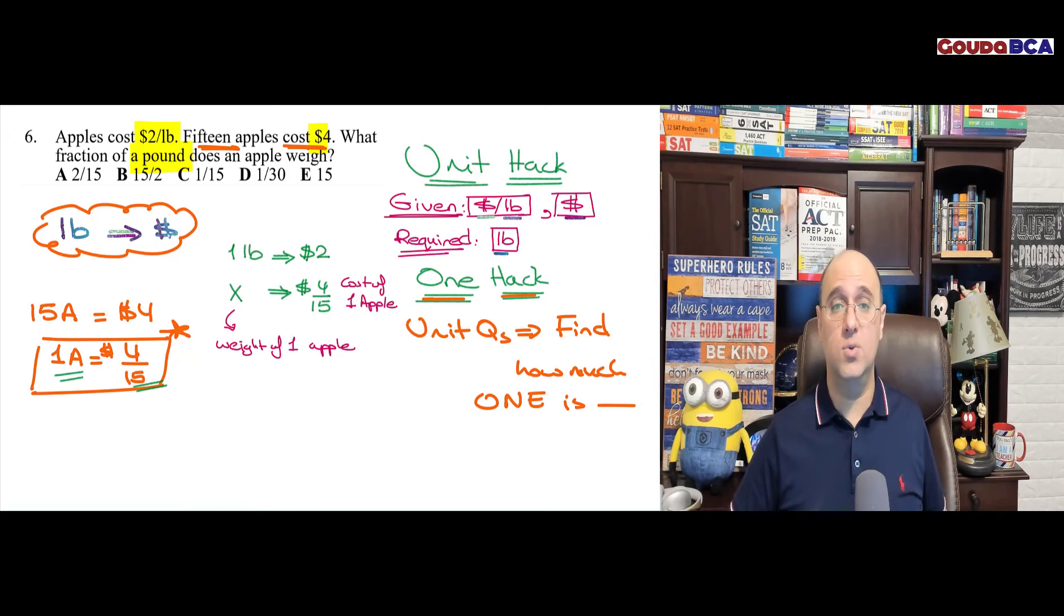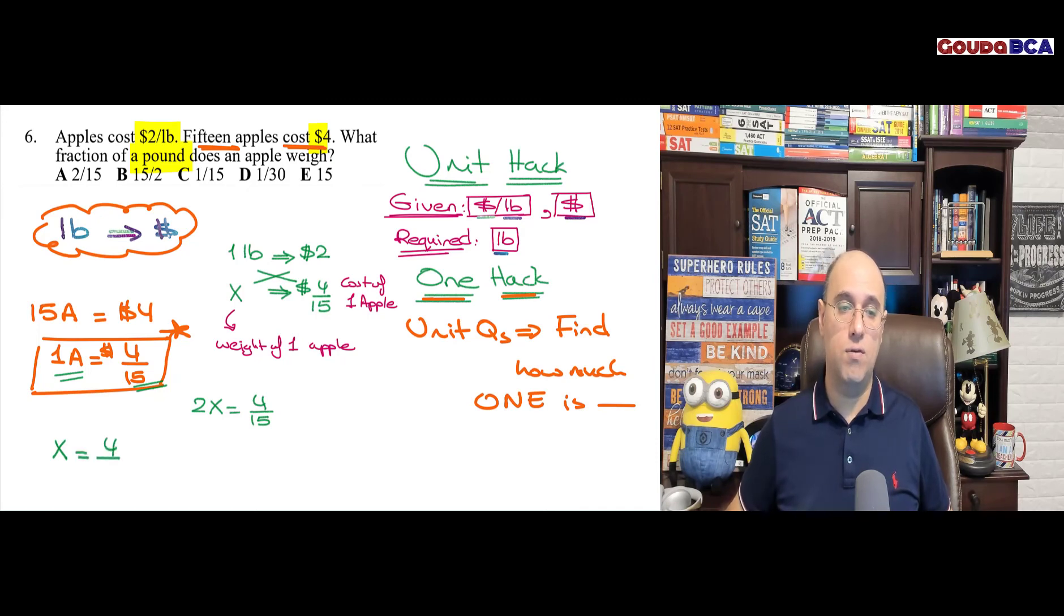And this is what the question is asking me about. Now, all I need to do is just cross multiply. So I cross multiply. I have 2 times x equals 4 over 15 times 1, which is 4 over 15.